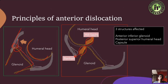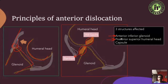Whenever you have anterior dislocation, there are three structures involved: the anterior inferior glenoid — your Bankart lesion, the posterior superior humeral head — your Hill-Sachs lesion, and the third thing is your capsule. These are the three structures you need to remember.